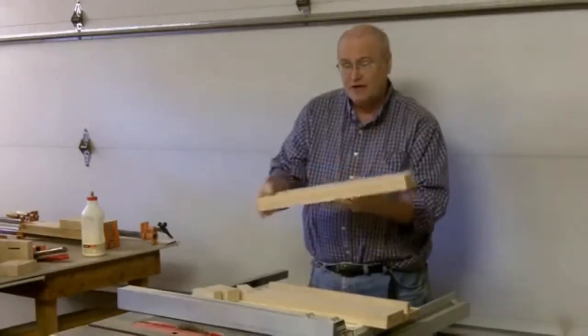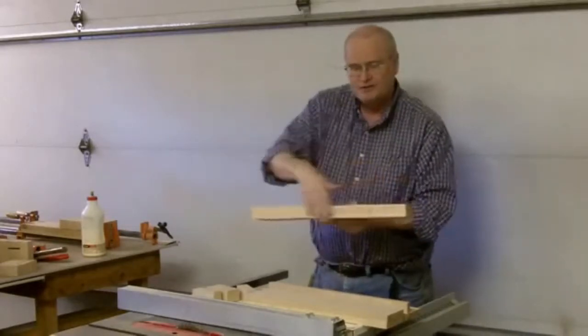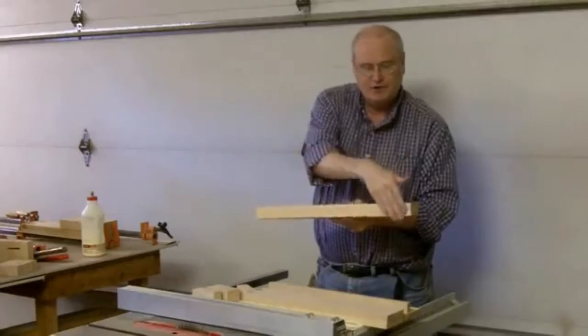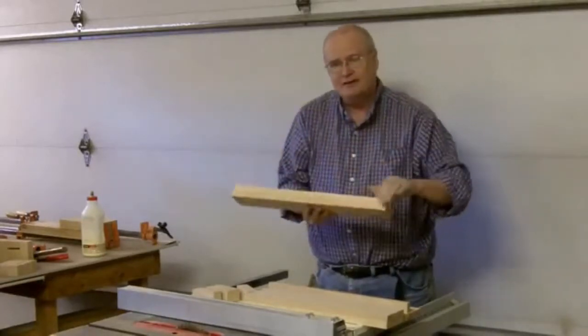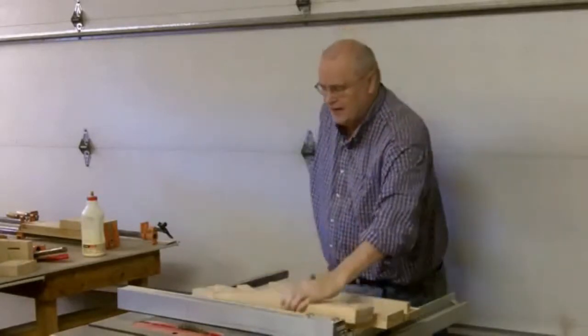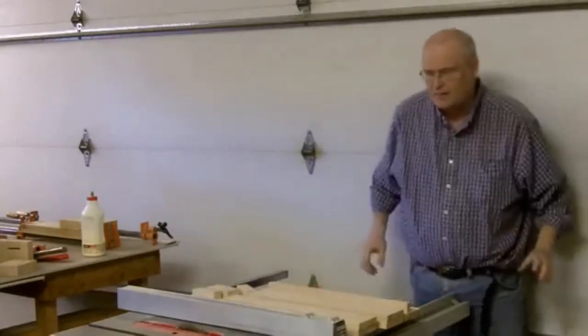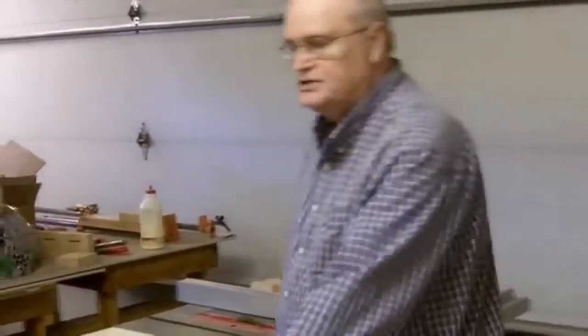After I glued them together and they had dried overnight, I put them on the saw. First cut all of the boards so that this first side was cut perfectly flush, turn it around and made it a little bit smaller and cut that so it was perfectly flush.